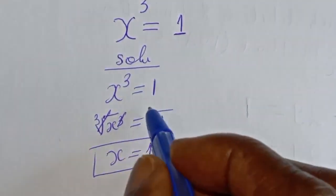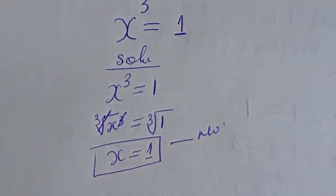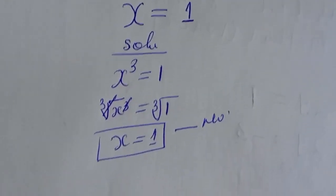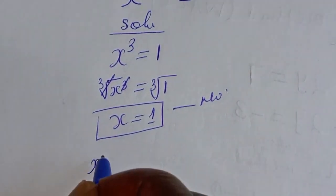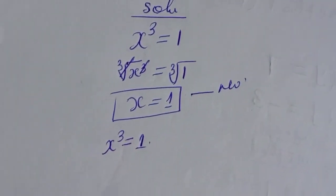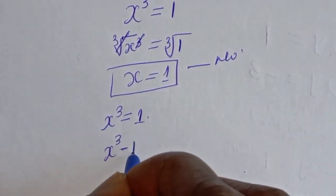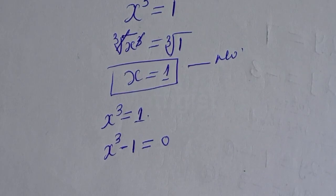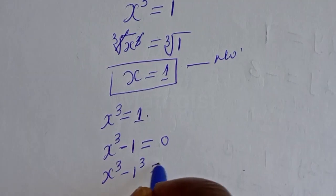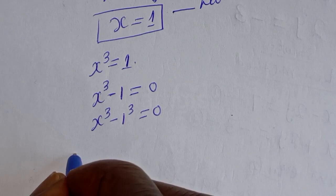Is this the only answer to this problem? No. So therefore, let's find other solutions to this equation. s raised to power 3 is equal to 1, which gives s raised to power 3 minus 1 is equal to 0. This is the same as s³ minus 1³ equals 0.